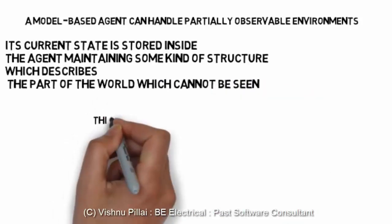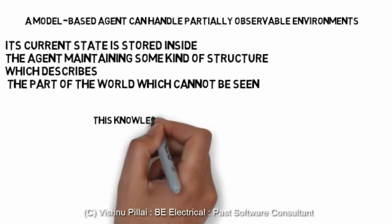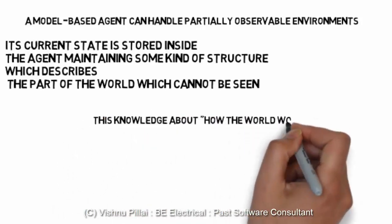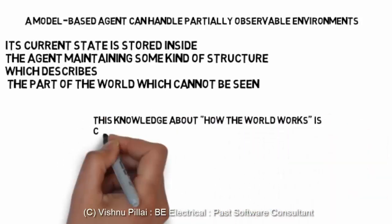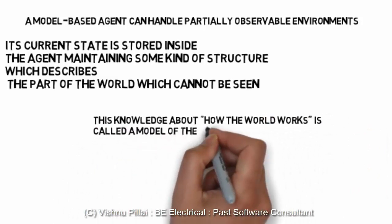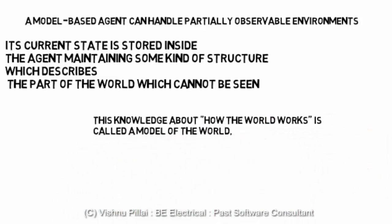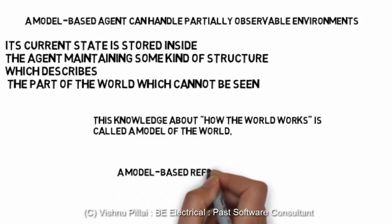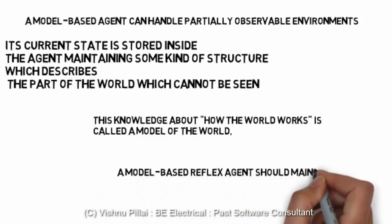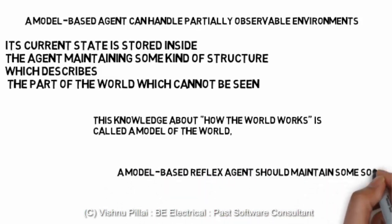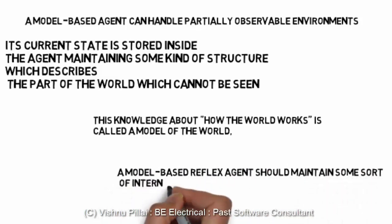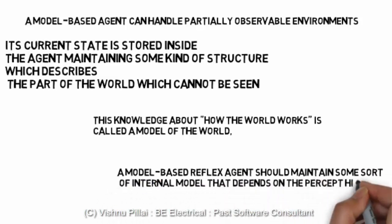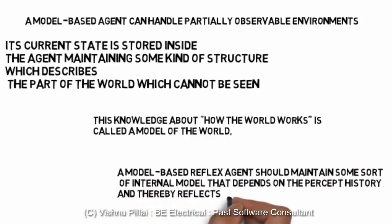This internal structure describes the part of the world which cannot be seen. The part of the world which cannot be seen is stored in the memory or the algorithms in the knowledge base of the agent. This knowledge about how the world works is called a model of the world.